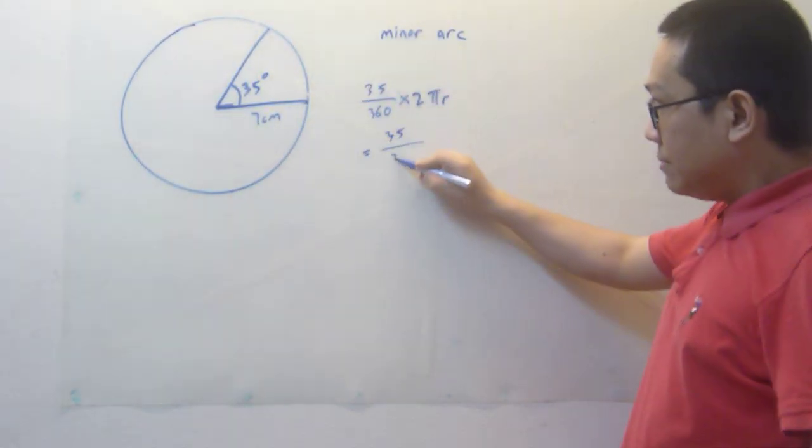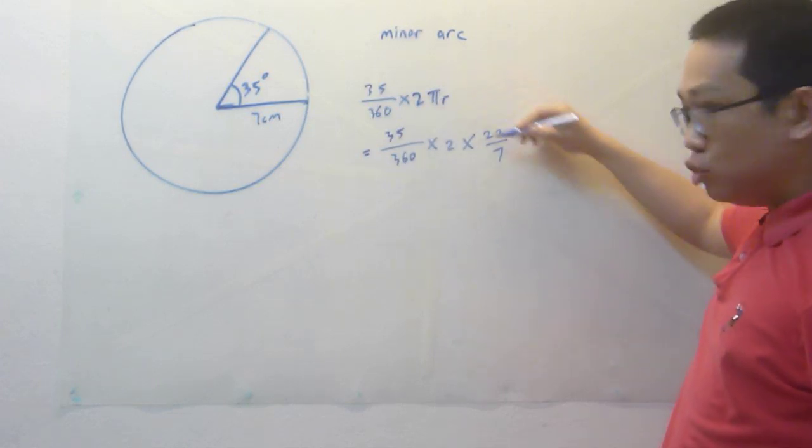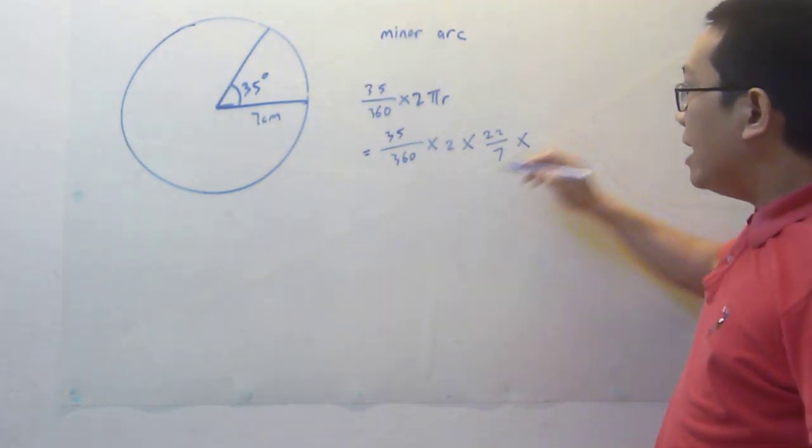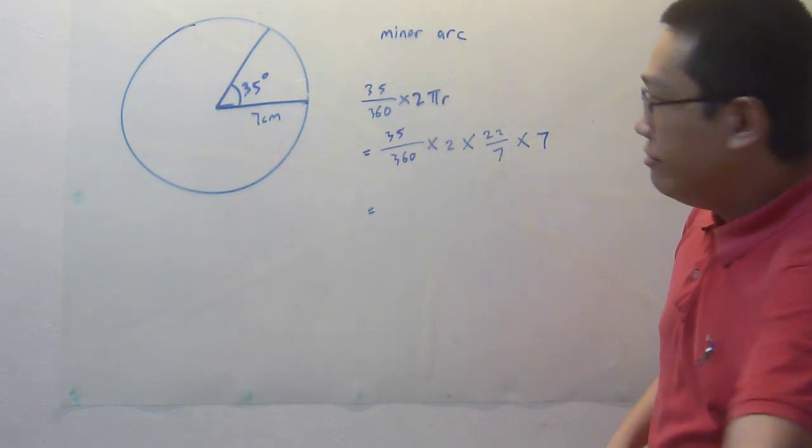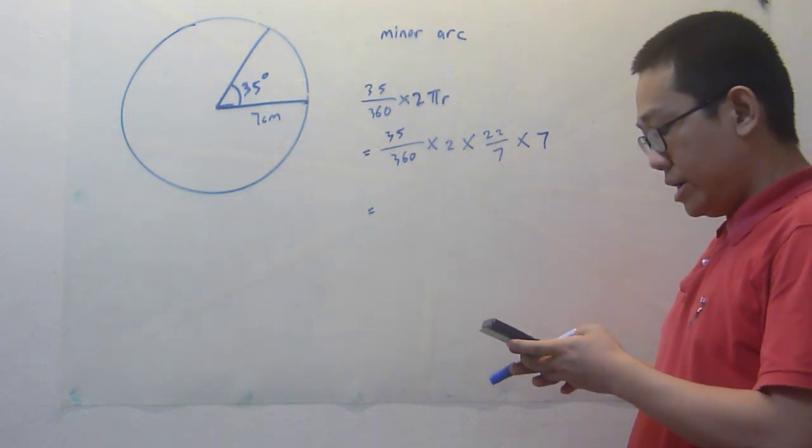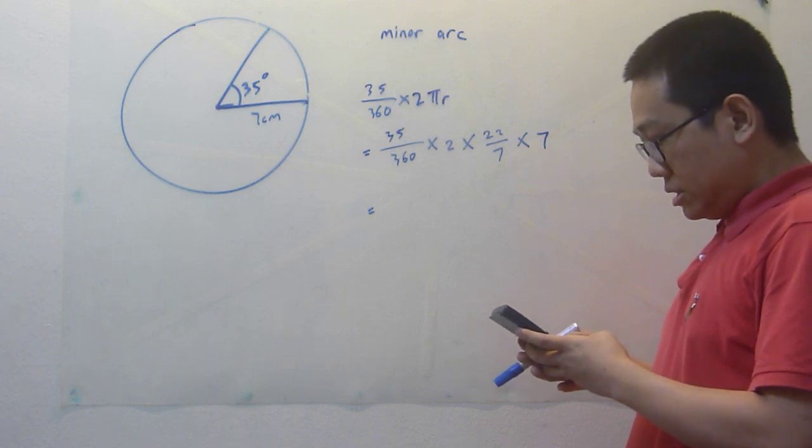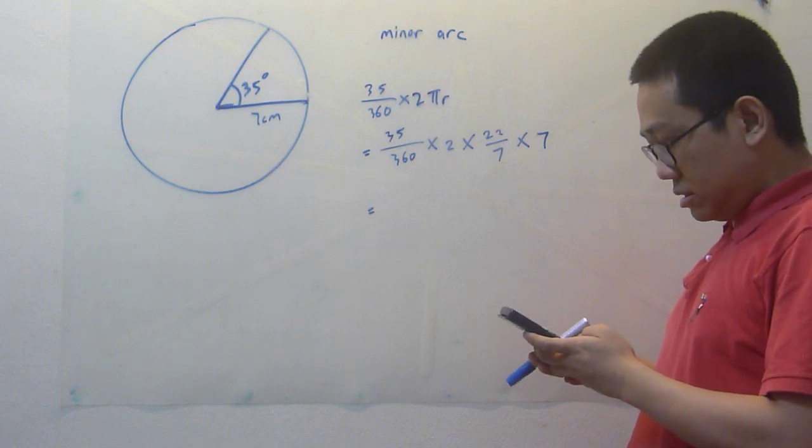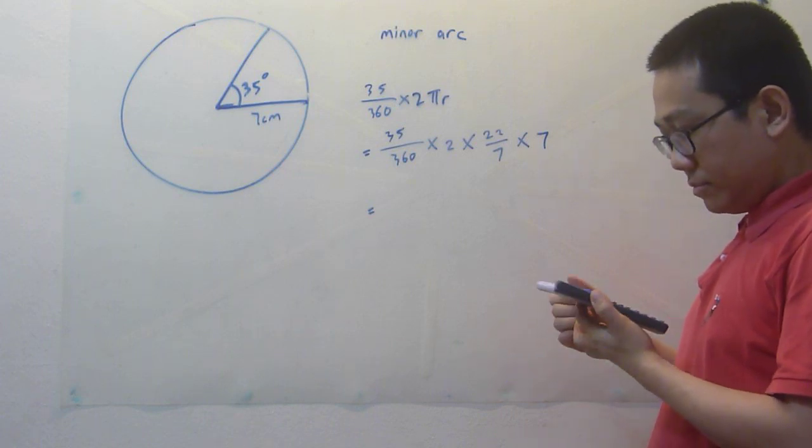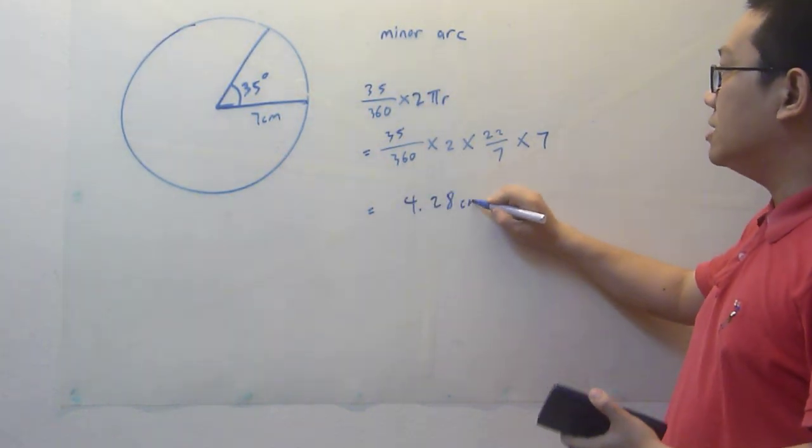So when I do substitution, I put in the figures. So π is equal to 22 over 7 and r is equal to 7 cm. So if I use my calculator and calculate, I will get 4.28 cm.